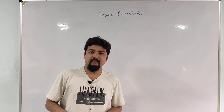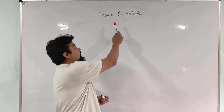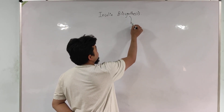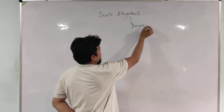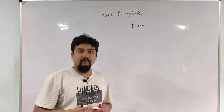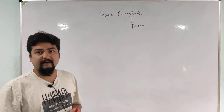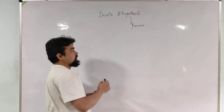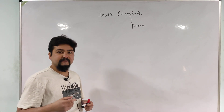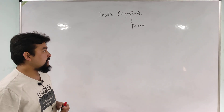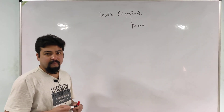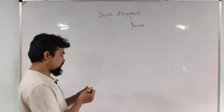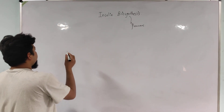Hello friends, today's topic for discussion is insulin biosynthesis — from where? From the pancreas. To understand insulin biosynthesis in detail, we should have a general idea about the pancreas. The pancreas is an anatomical organ where the actual synthesis of insulin happens, and it is part of the digestive system, present at the upper left of the abdomen, behind the stomach.